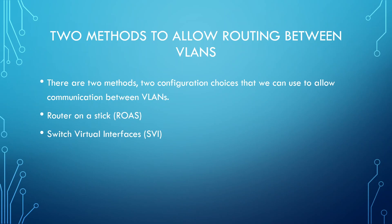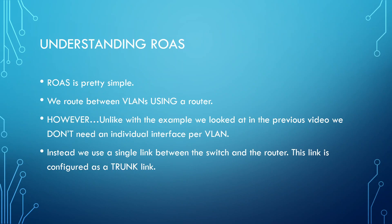In this video we'll go over the theory of these two methods, and in the videos which follow we'll look at how to configure them on Cisco devices. To start off with router on a stick — it's pretty simple. We literally just use a router to route between VLANs, but here is the difference: with router on a stick we use a single interface to support all VLANs. We use a single link between the switch and the router, and that link can carry traffic for all VLANs. From the switch side, this is accomplished by using a trunk link, because a trunk link can support multiple VLANs.